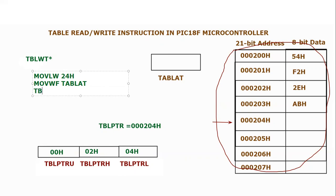Then I'm going to use this table pointer star. What is going to happen is the working register will become 24 hex, and that working register will move into the TABLAT register. That means this TABLAT register will hold 24 hex.